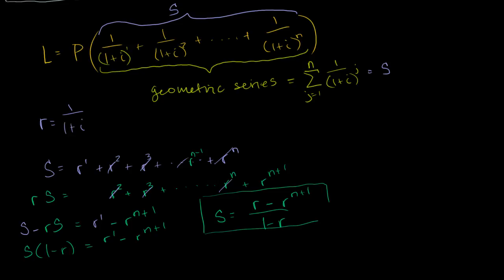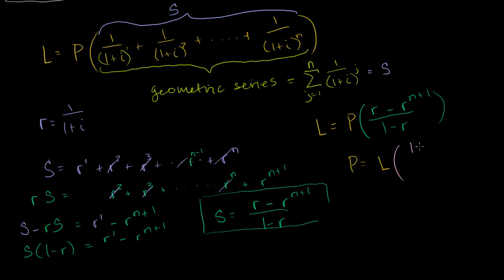Now we can rewrite the full formula. The loan amount equals the monthly payment P times S, so L = P × [r − r^(n+1)] / (1 − r). Solving for P by multiplying both sides by the inverse: P equals L times (1 − r) / [r − r^(n+1)], where r = 1/(1 + I). And we're done — this is how you solve for your actual mortgage payment.